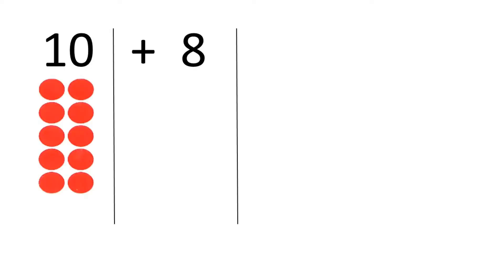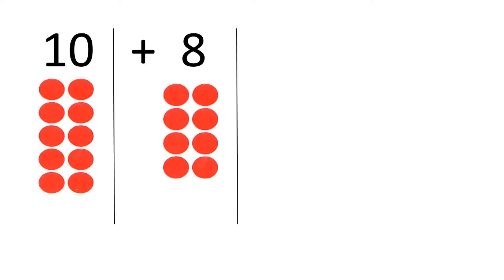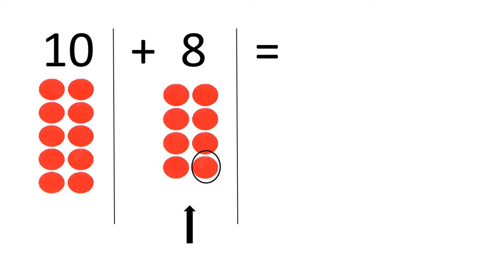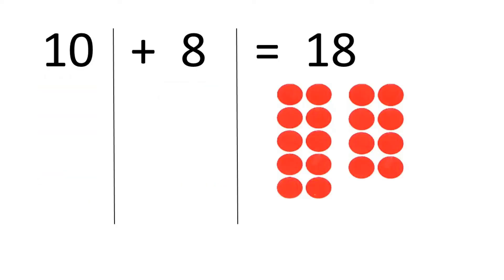10, and I draw 10 red dots. Plus 8, I draw 8 red dots. Equals... Let's count them again. Now I have 10 red dots here, so again I will count upwards. Ready? 11, 12, 13, 14, 15, 16, 17, 18. So 10 plus 8 equals 18, and I drew 18 red dots below.